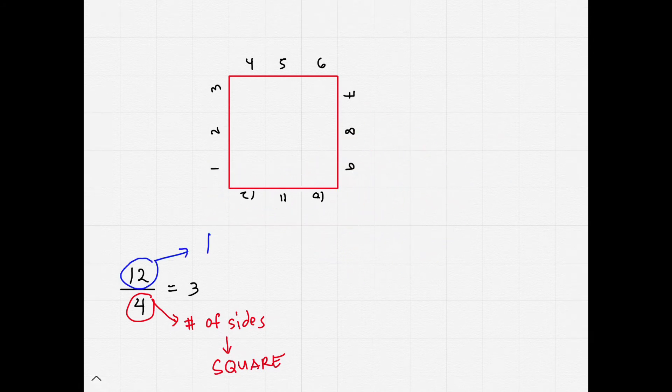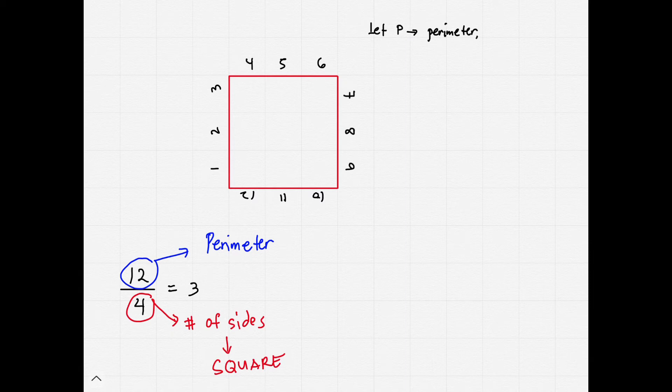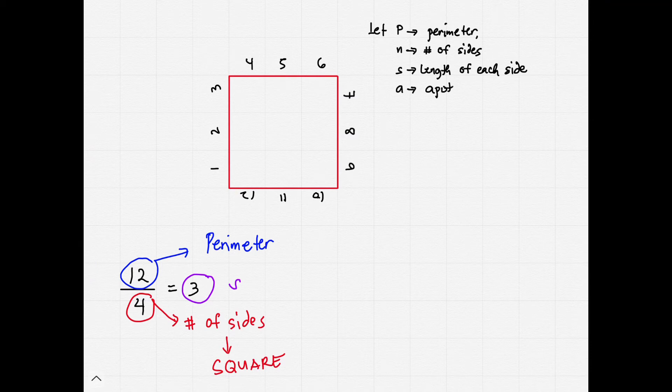So for the benefit of others, if you want to get the length of each side of a regular polygon with a given perimeter, you decide to divide the perimeter by the number of sides. Once you know the length of each side of a regular polygon through the use of perimeter, we can now proceed to solving of the apothem.